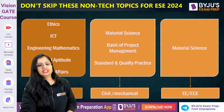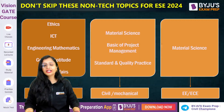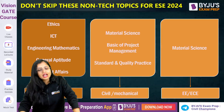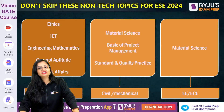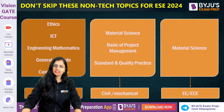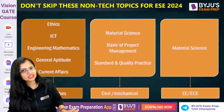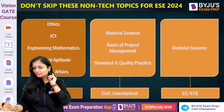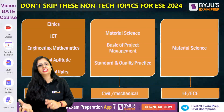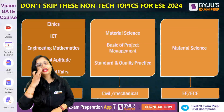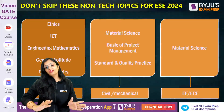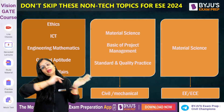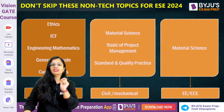Now let me tell you the important topics you cannot skip. For all branches — Civil, Mechanical, Electrical, and ECE — you must study these five topics: Ethics, ICT, Engineering Mathematics, General Aptitude, and Current Affairs. These are mandatory regardless of your branch.